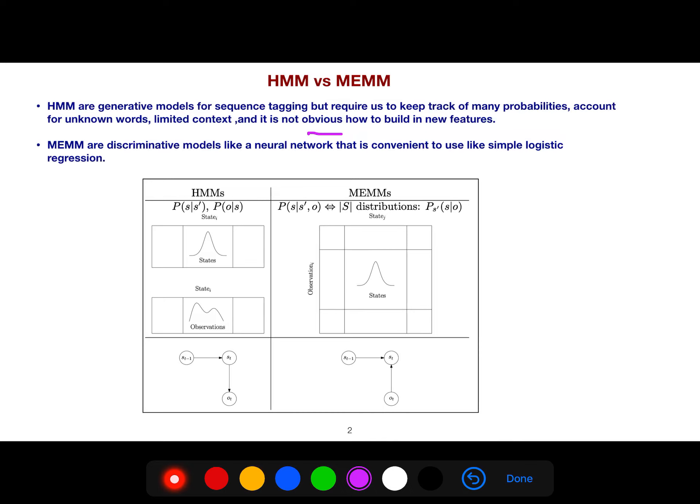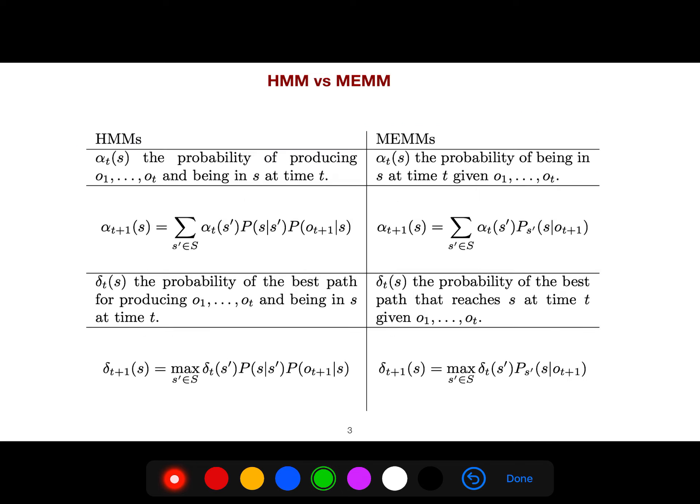And you should note that the direction is from state to observation in the HMM, hidden Markov model, but the direction is the opposite in the MEMM. So both are directed graphs, but the direction is different. And in HMM, the alpha probability producing observation 1 to observation T, so when we want to compare the alphas of them, you see that in HMM, you should also multiply the probability of transition and emission.